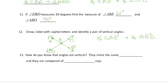Here's another pair: angle ABC and angle DBE. Those angles are here and here — this angle and this angle right there. So that was the second pair; there are two pairs in this diagram.